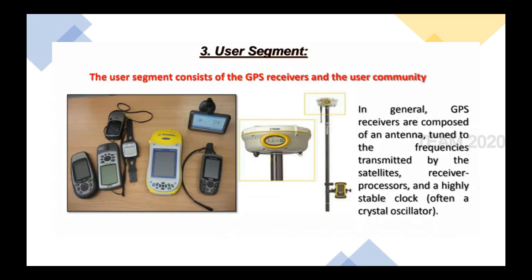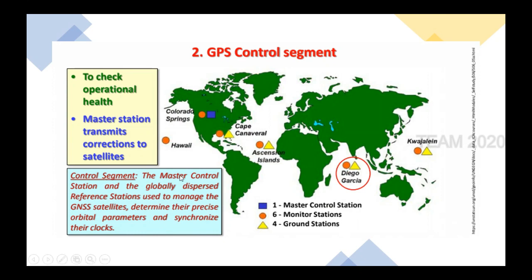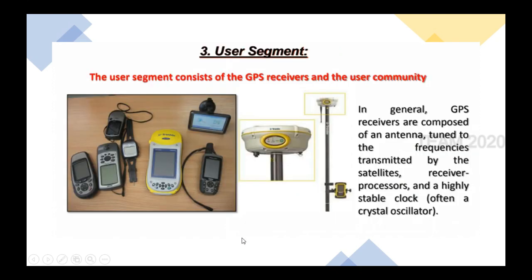The master control station and globally dispersed reference stations are used to manage GNSS satellites, determine their precise orbital parameters, and synchronize their clocks. GPS consists of one master control station located at Colorado, six monitoring stations, and four ground stations throughout the world. The third segment is the user segment, which consists of GPS receivers and the user community. GPS receivers are composed of an antenna tuned to the frequencies transmitted by the satellites, along with a receiver, processors, and a highly stable clock.